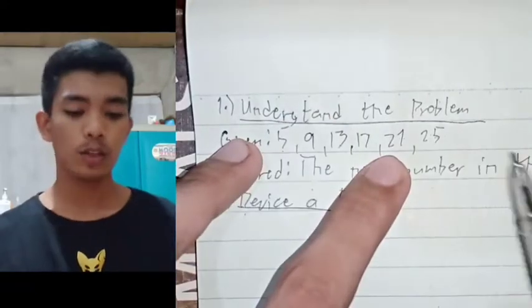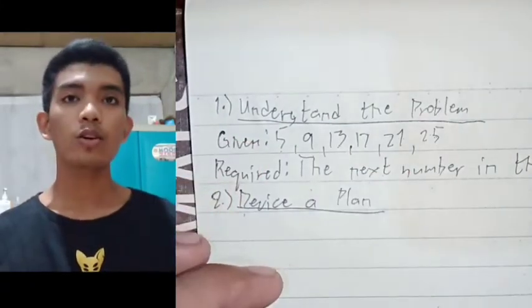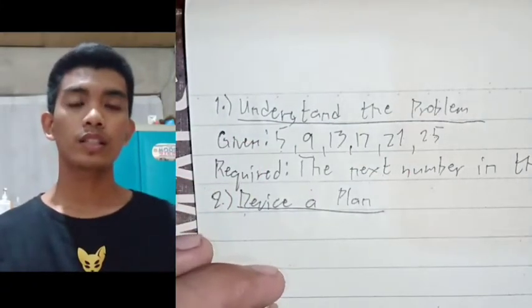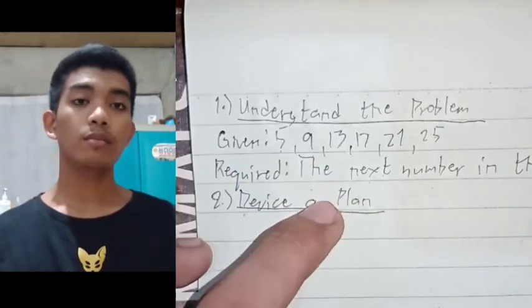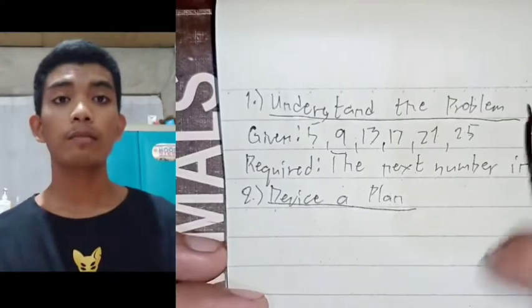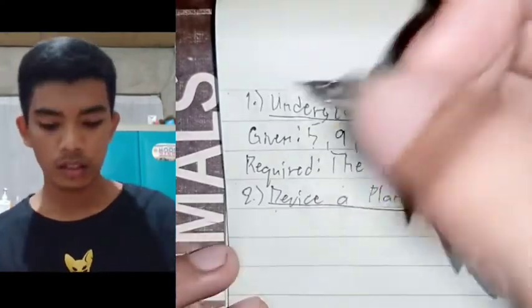So what we're going to do is to devise a plan in order to find what is the missing term. That plan is to identify the pattern.